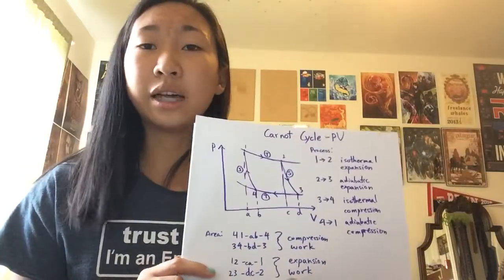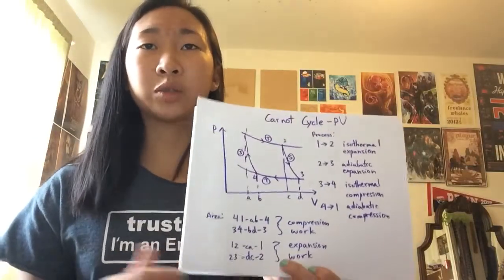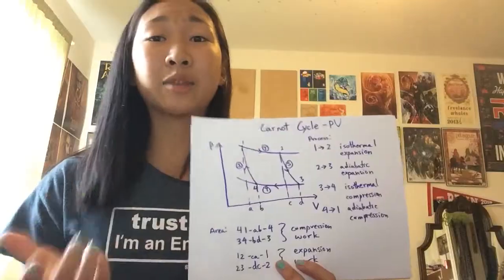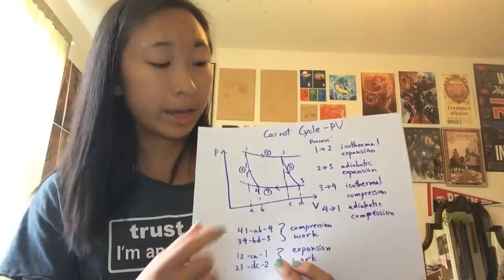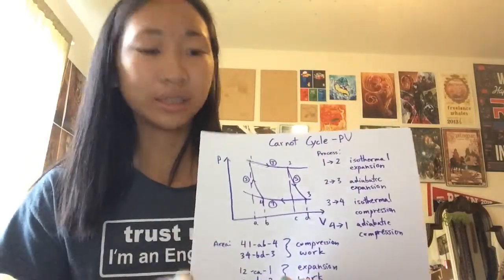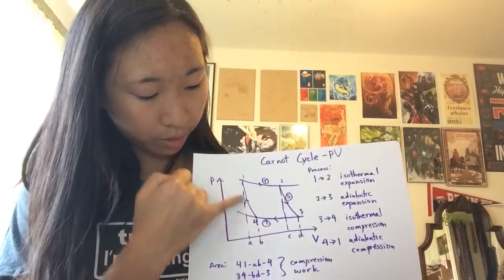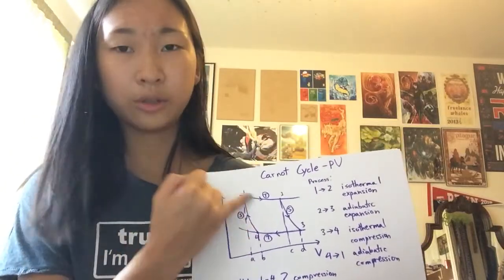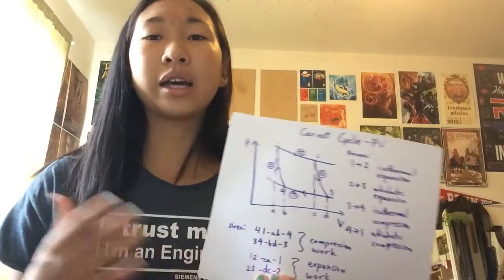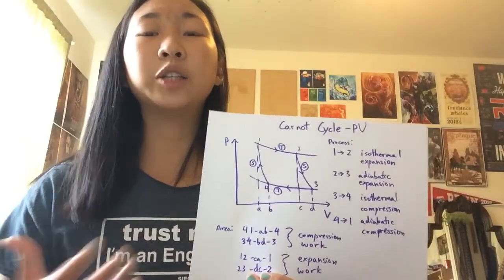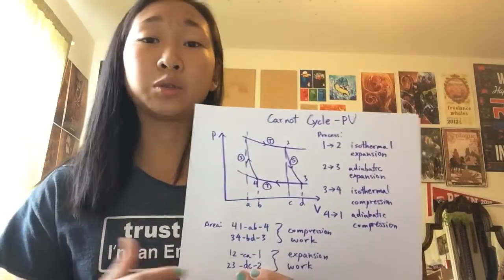You can see and reference other Khan Academy videos, such as what are PV diagrams, to see a mathematical explanation of why the area under these processes, for example, 1, 4, B, A, 1, this little section, you can see why the volume under the curve represents work.